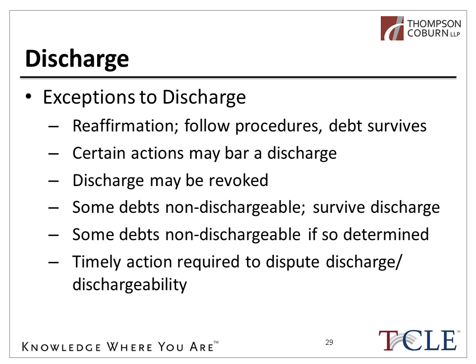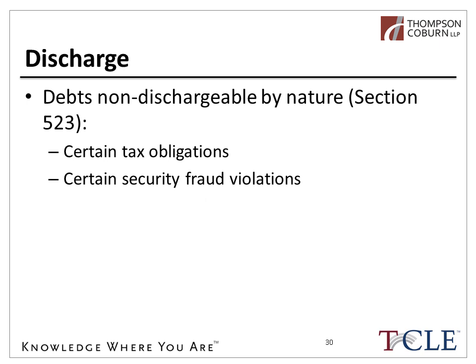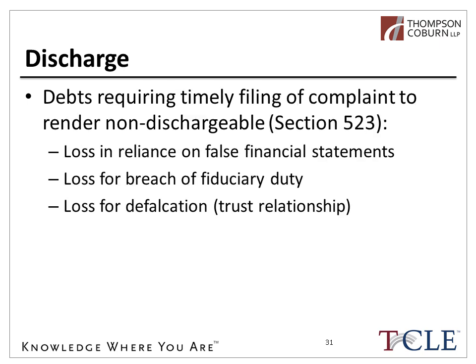There has to be timely action taken to dispute the overall discharge or the dischargeability of a claim. Essentially, a creditor needs to file a lawsuit — an adversary proceeding — in the bankruptcy to have the discharge barred or the dischargeability of a particular claim barred. Typically, that deadline is 90 days after the 341 meeting. The kinds of debts that are non-dischargeable by nature include tax obligations, certain securities fraud violations, the exercise of police power, and certain domestic support obligations. Debts that can be determined non-dischargeable by filing a complaint are covered in Section 523 of the Code — examples include reliance on false financial statements, breach of fiduciary duty, or defalcation — a breach of a trust relationship.